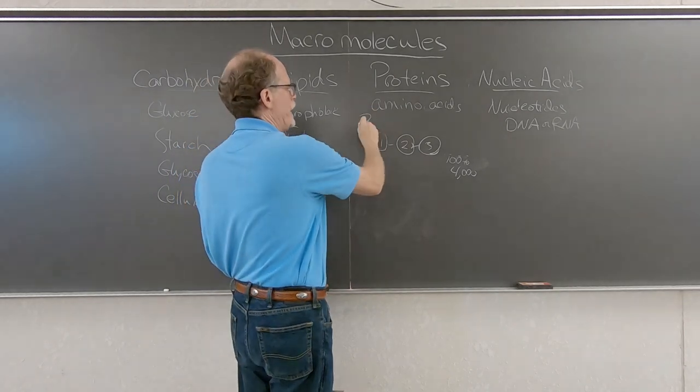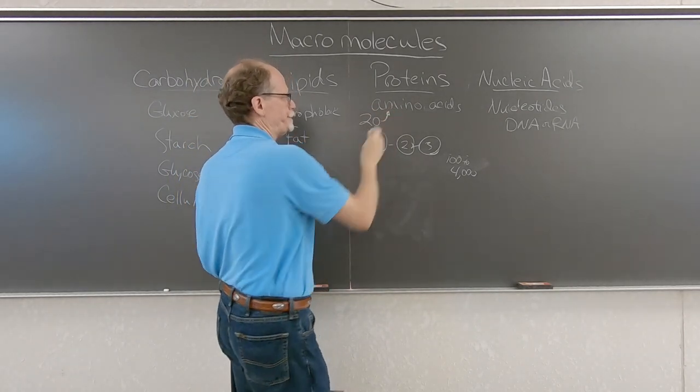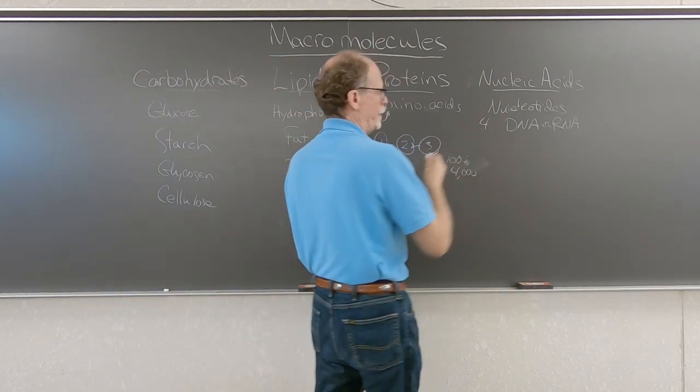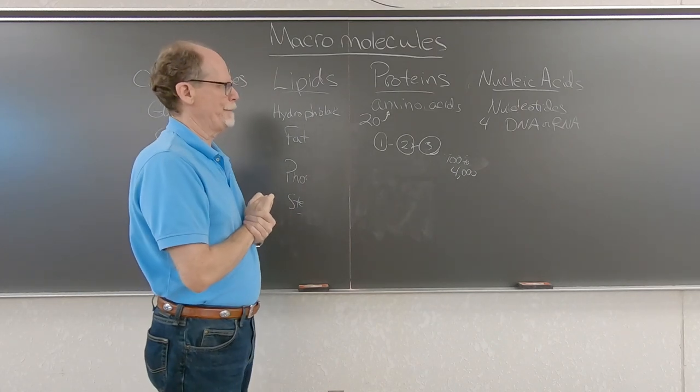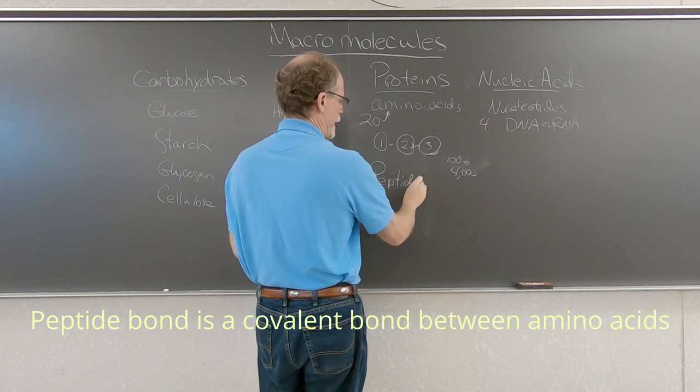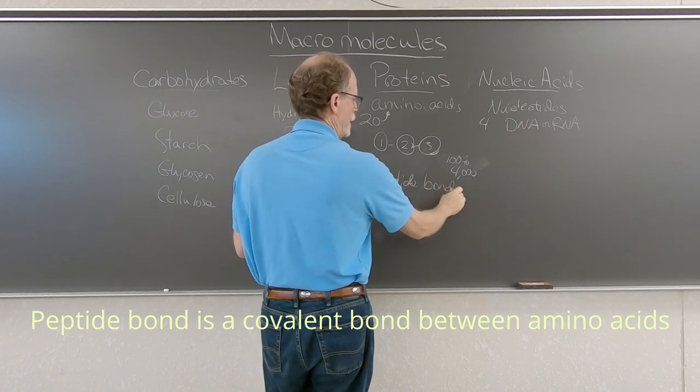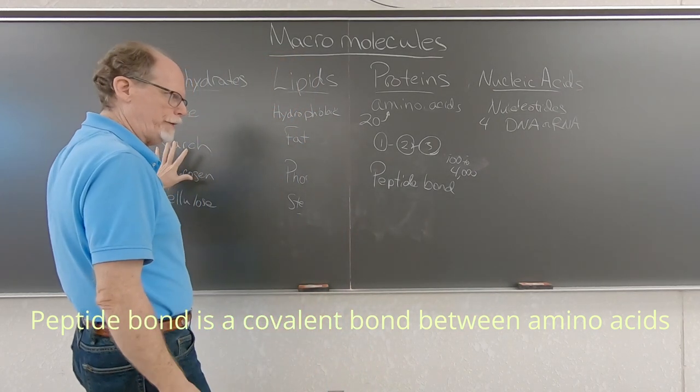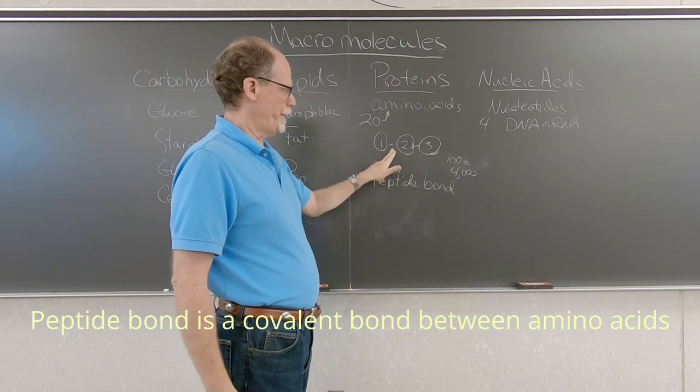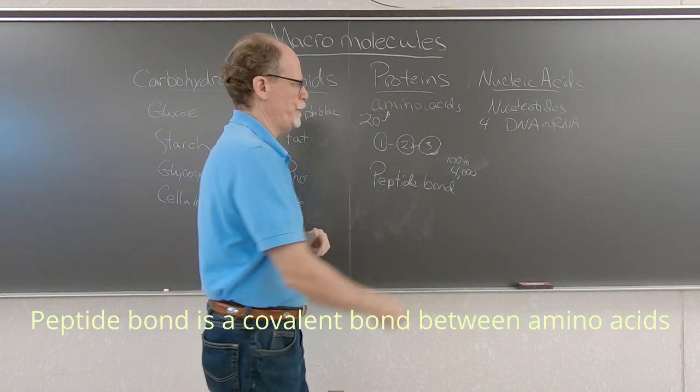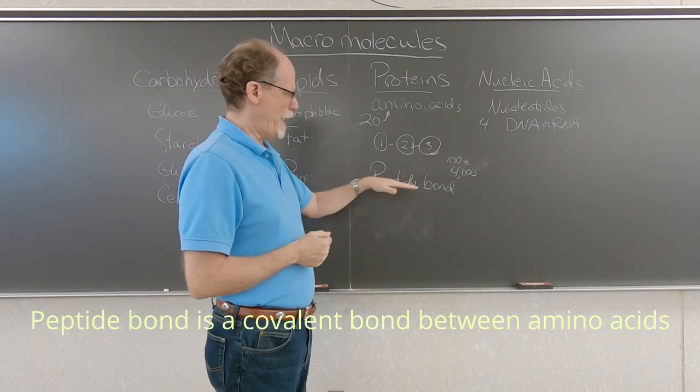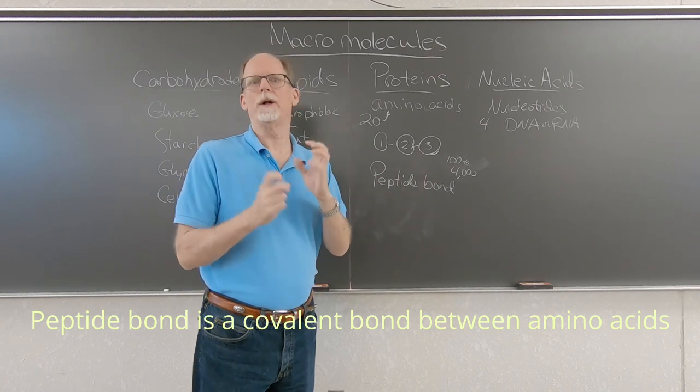There's 20 different amino acids. So there's, in nucleotides, there's only four if you compare the two. Then the other thing about proteins is you use a peptide bond. Glycosidic bond is in carbohydrates, it's equivalent to a peptide bond to make proteins. It's the bond between the amino acids. So if you have 100 amino acids in a protein, then you have 99 peptide bonds holding them all together.